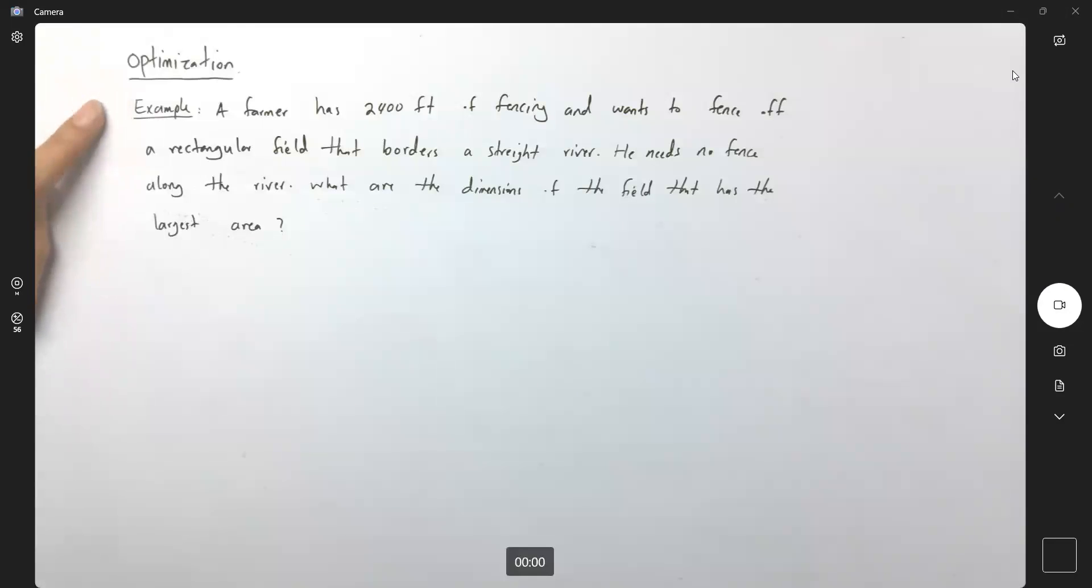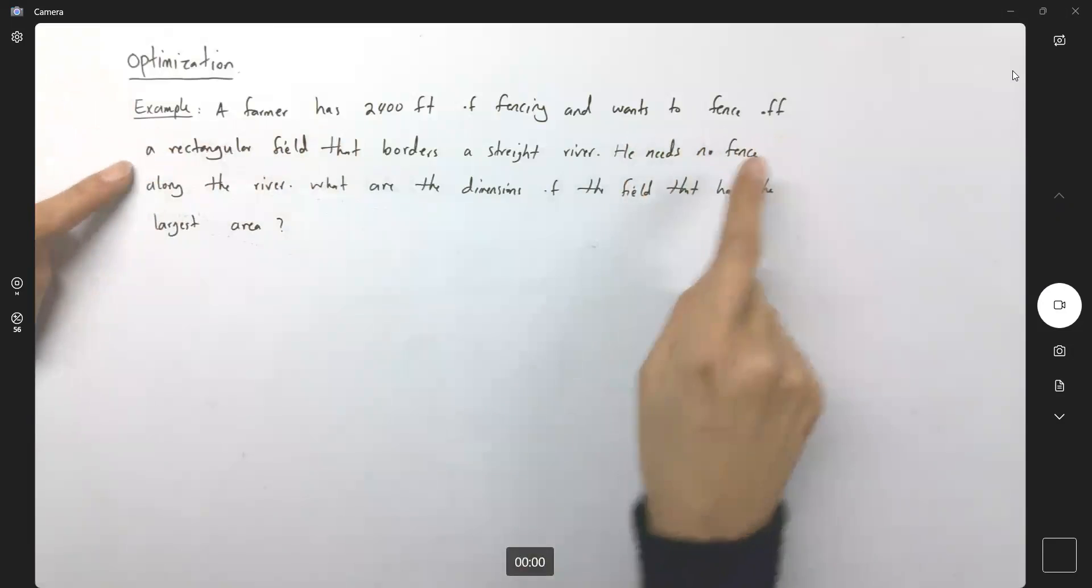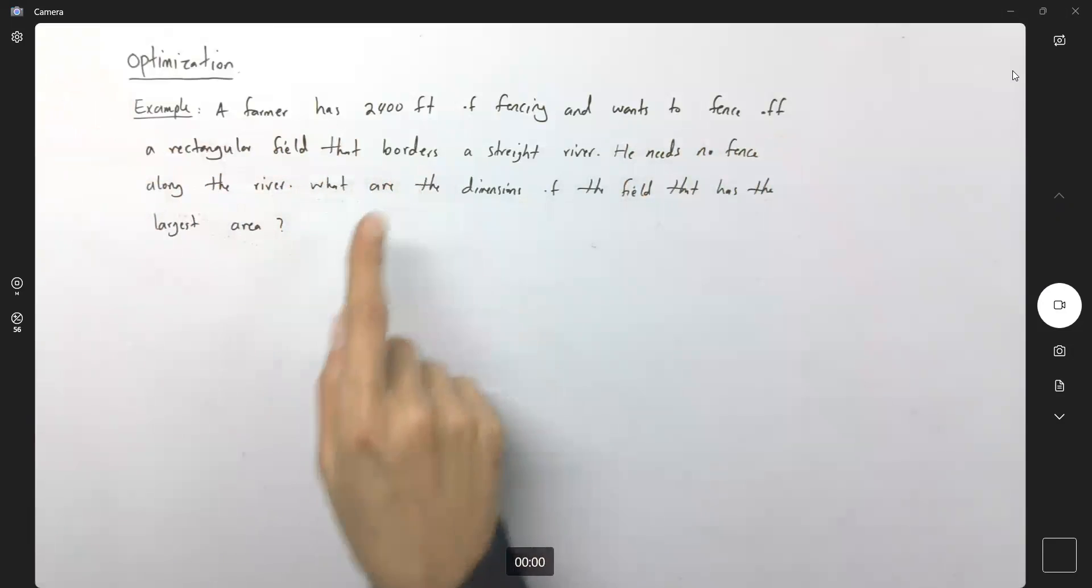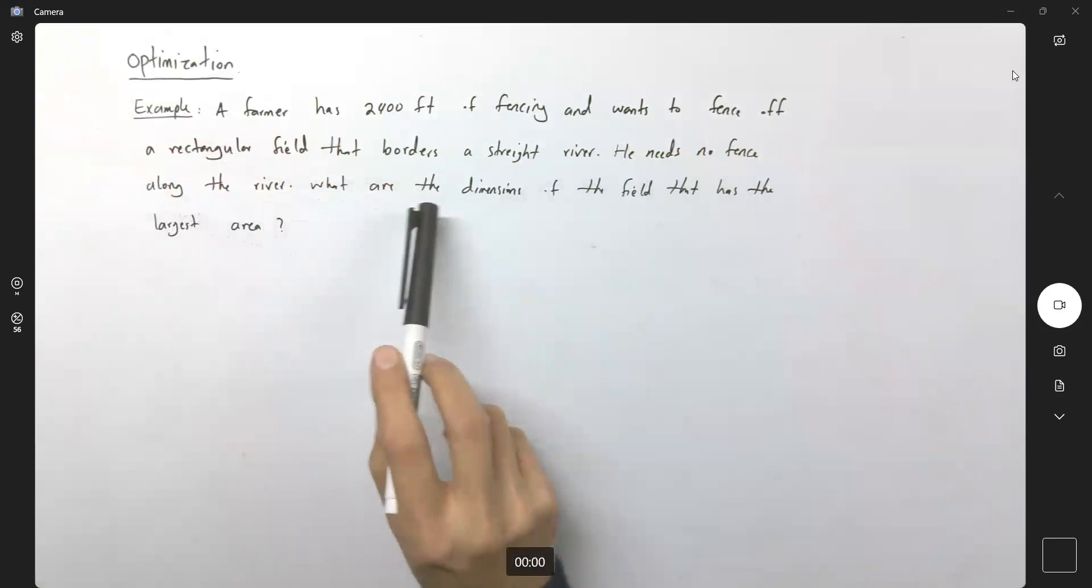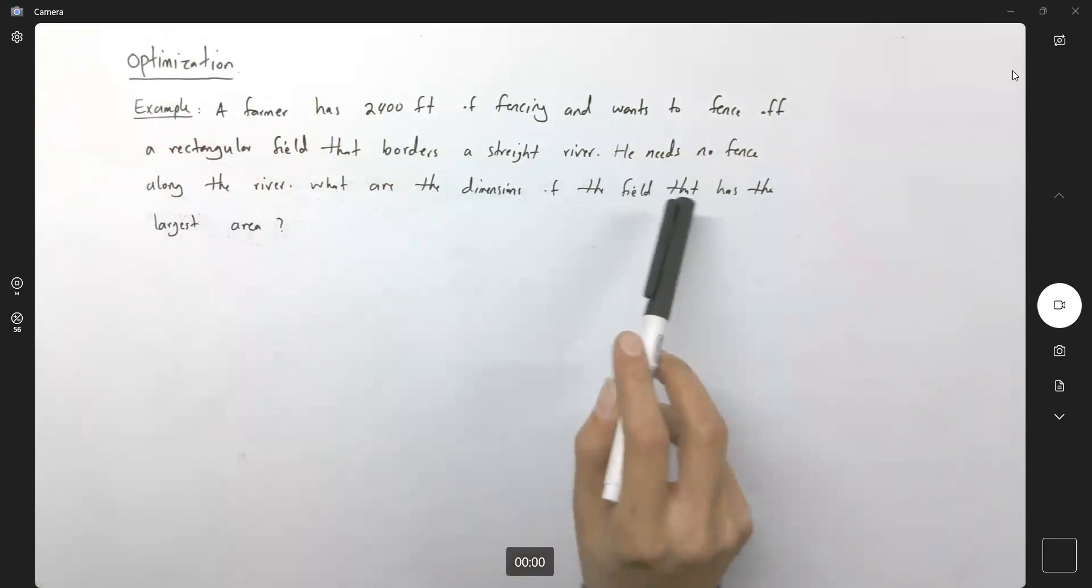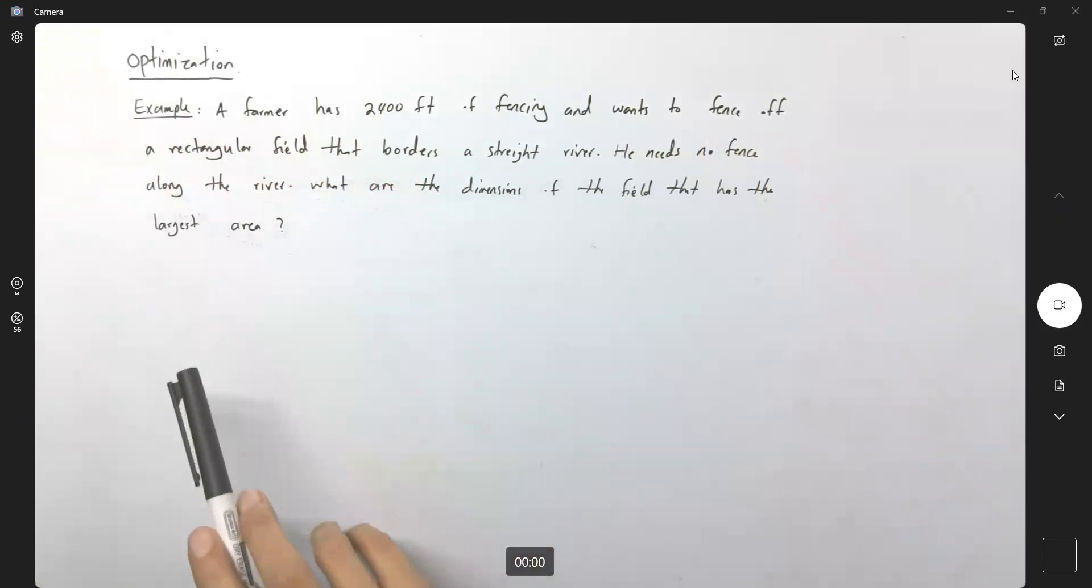Optimization problem, example. A farmer has 2,400 feet of fencing and wants to fence off a rectangular field that borders a straight river. He needs no fence along the river. What are the dimensions of the field that has the largest area?